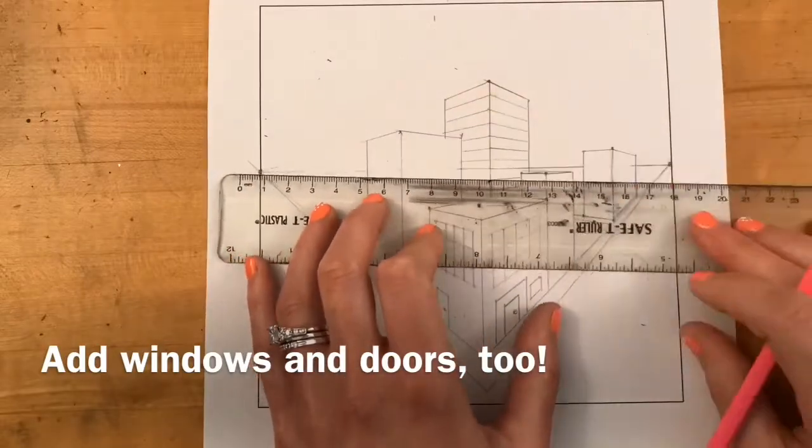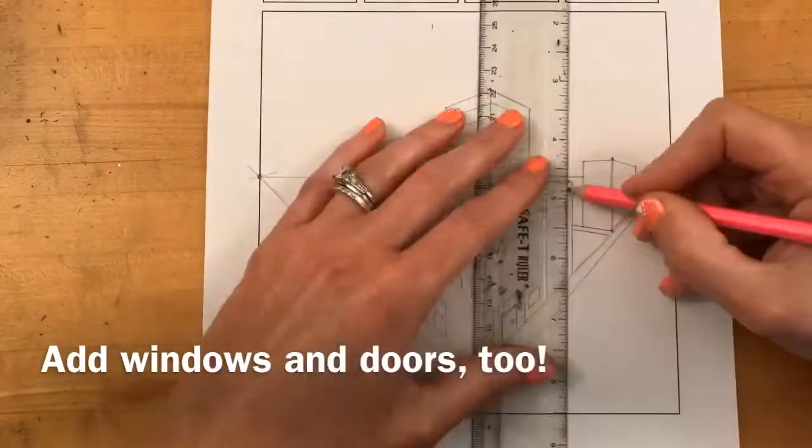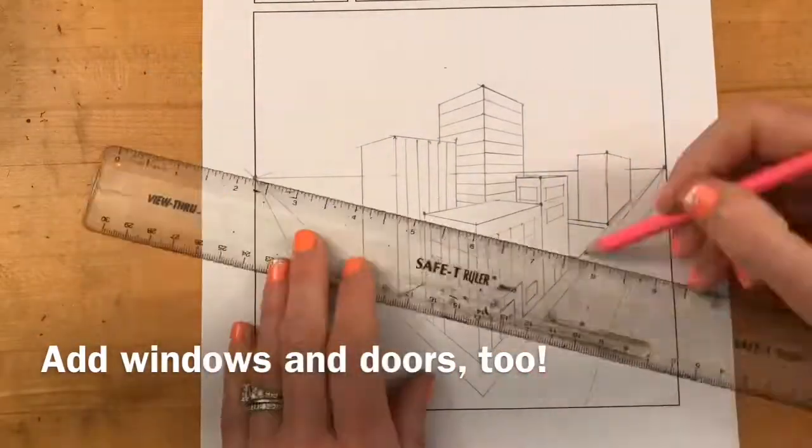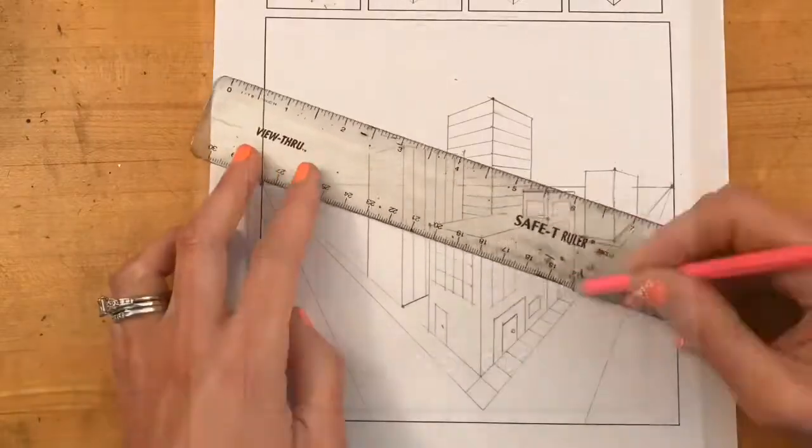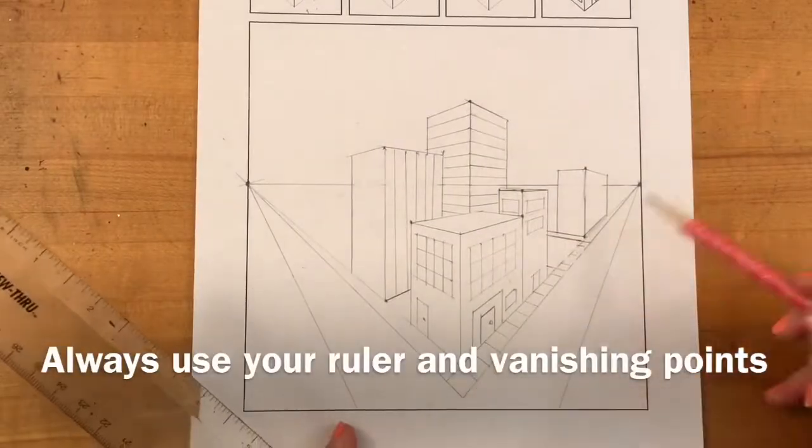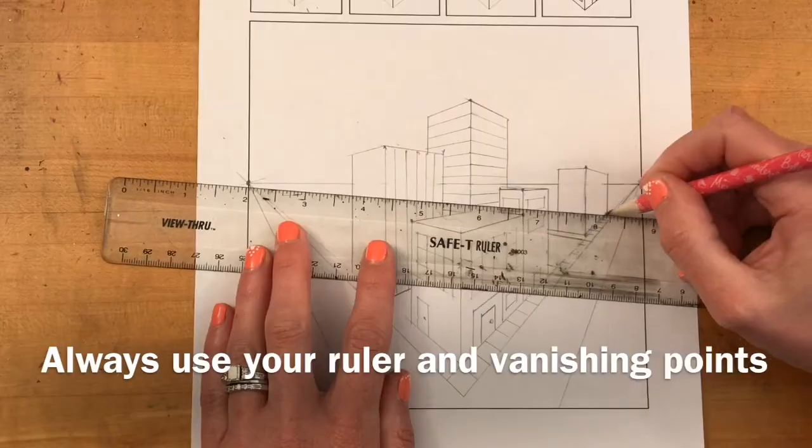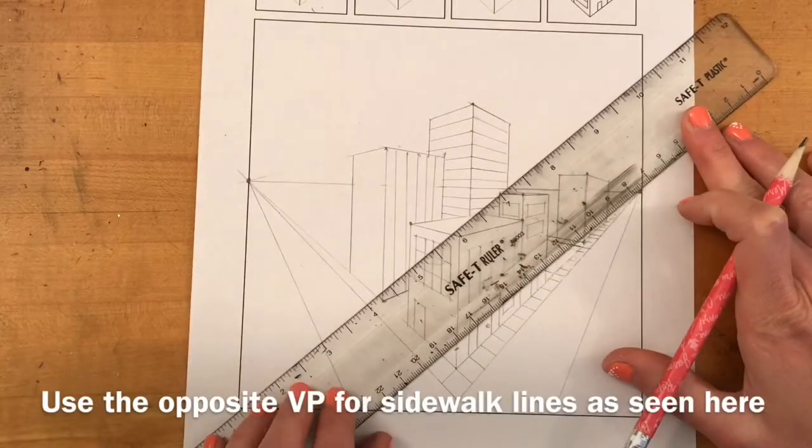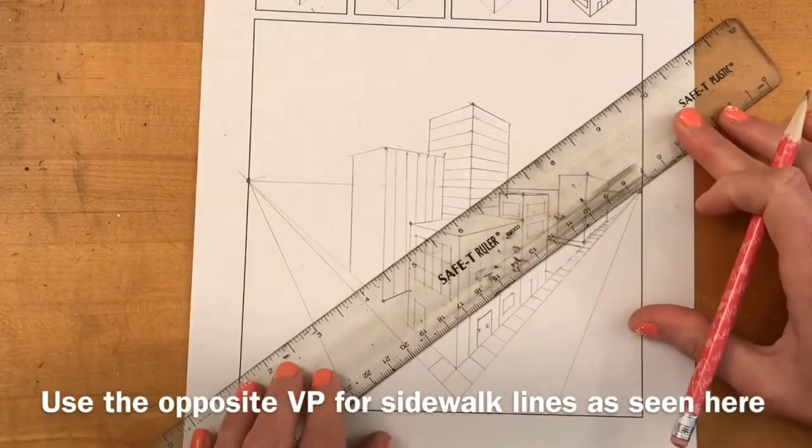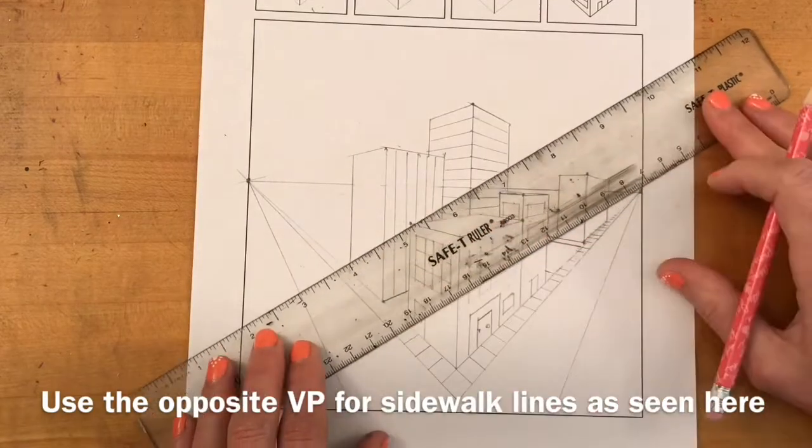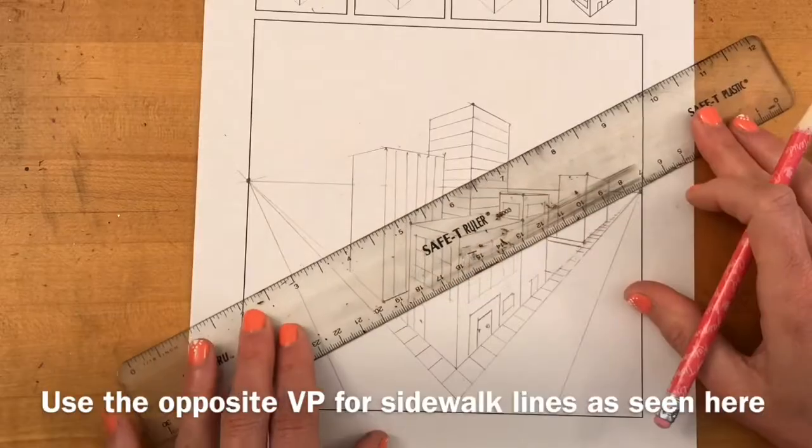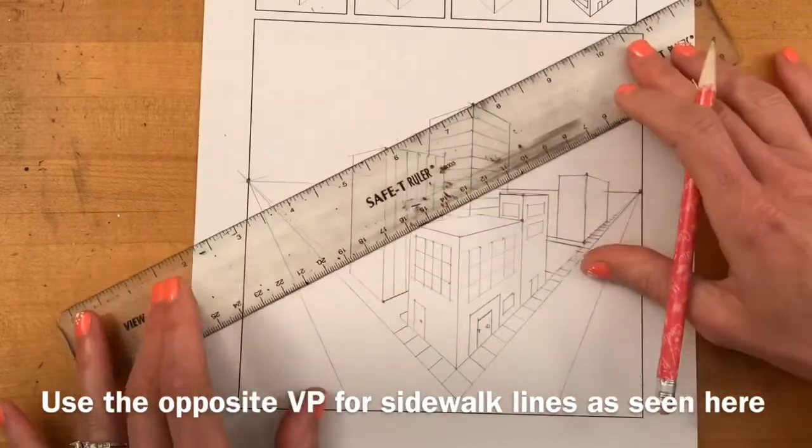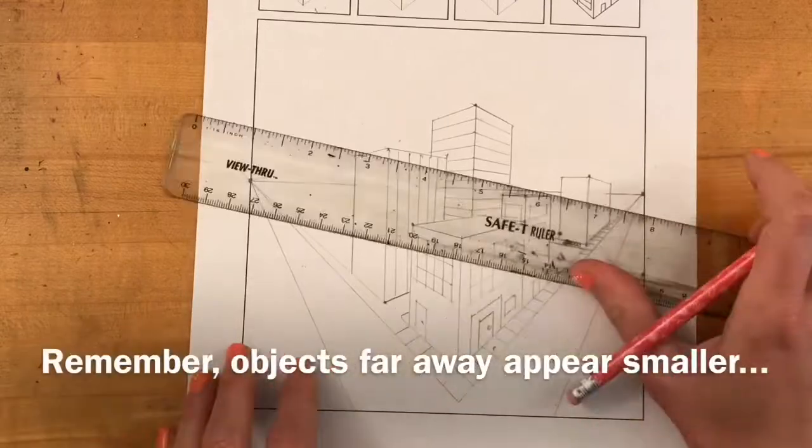Just remember to always use your ruler and use your two vanishing points for all lines that recede into the distance. Also remember that objects that are further away not only appear to be smaller but they also appear to be closer together. If you're creating things like sidewalks and you want to show the lines between the different sections of the sidewalk, keep that in mind. You want to make your lines get closer together as they get closer to the vanishing point.